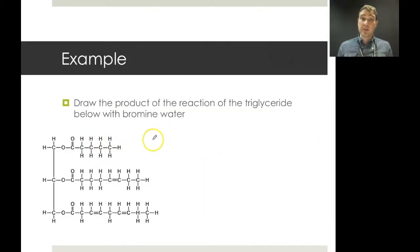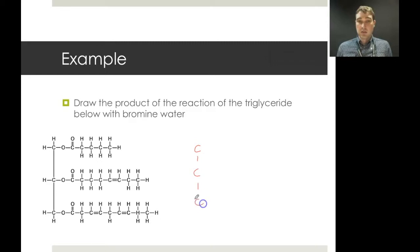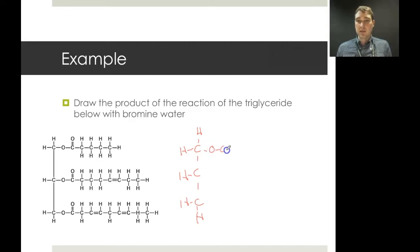Here's an example question: draw the product of reaction of the triglyceride below with bromine water. We start with the glycerol backbone with the appropriate hydrogens, then put in the ester groups — C to O to C double-bonded O — making sure the ester groups are present.